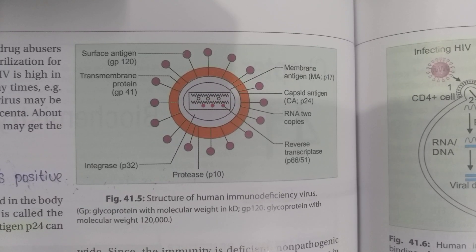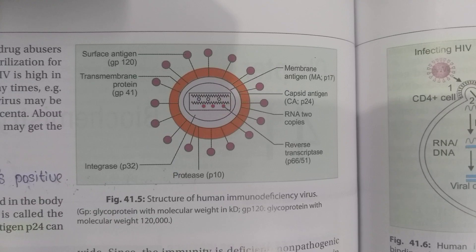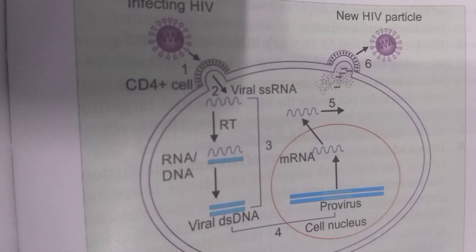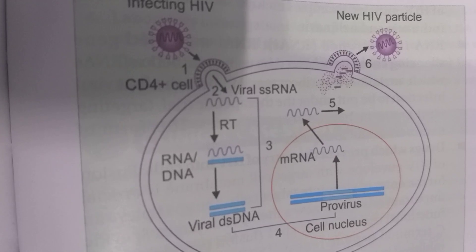The outer core also consists of two glycoproteins: gp120 and gp41. The surface antigen gp120 binds to receptors present on the membrane, and the transmembrane protein gp41 undergoes conformational changes. The binding of HIV with the target cell is through a receptor mechanism.